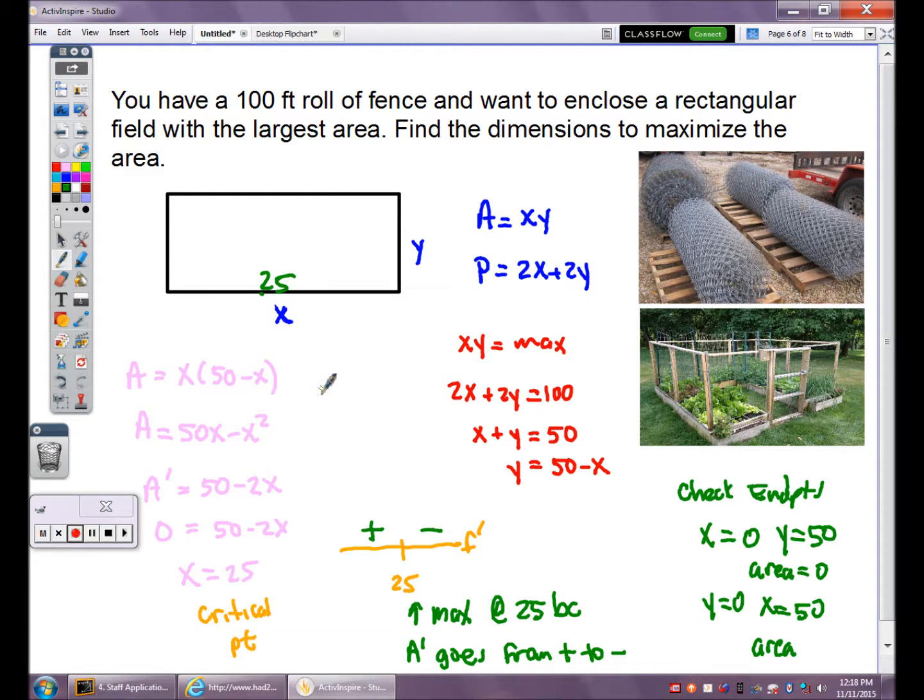To get your Y value, plug it back into the equation. Y equals 50 minus X. X is 25, so Y is 25. Your dimensions are 25 by 25. It's actually a square, not a rectangular area. Your perimeter, 25 plus 25 plus 25 plus 25, covers your 100 foot roll of fence. And you're maximizing the area, 25 times 25, gives you the most amount of vegetables you can put in that garden.